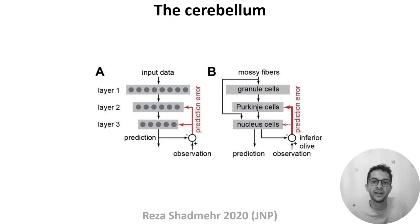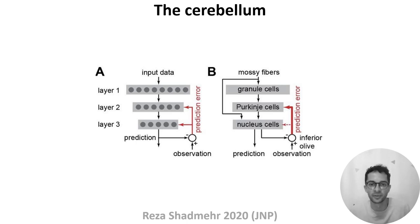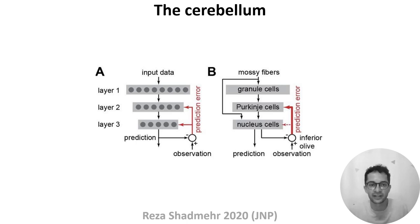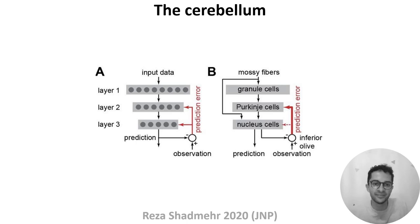These outputs are then compared to input observations, and the difference between the two is fed back to the network as an error signal via the climbing fiber pathway, shown in red on this diagram. If you're interested in learning more, this paper focuses on a really interesting question: how the network can learn when the connections conveying the error signal to the third layer are relatively weak, shown in panel B by the thin red arrow.